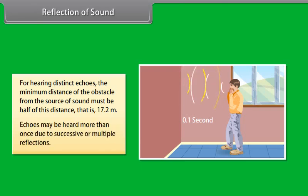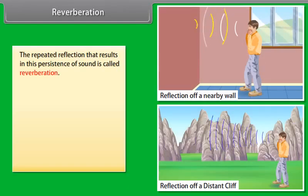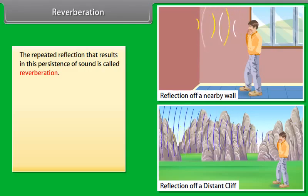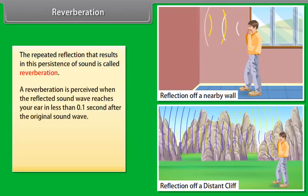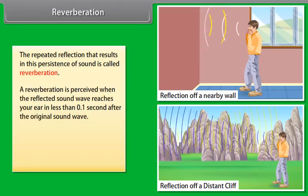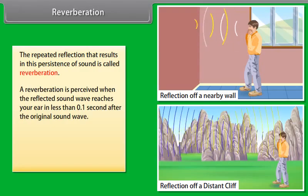Thus, for hearing distant echoes, the minimum distance of the obstacle from the source of sound must be half of this distance, that is 17.2 meters. This distance will change with the temperature of air. Echoes may be heard more than once due to successive or multiple reflections.